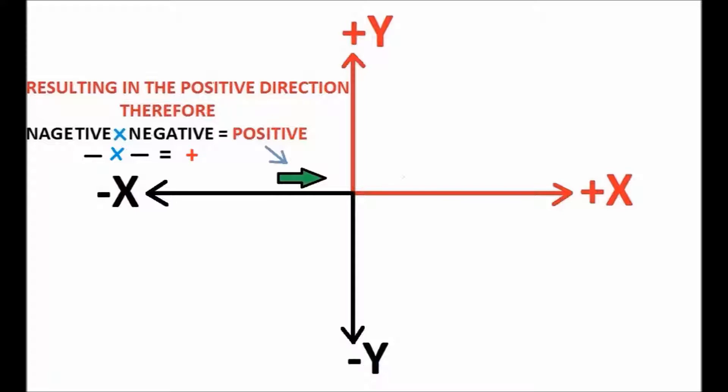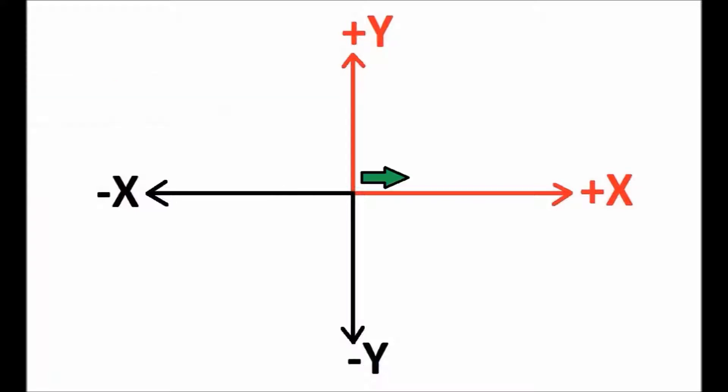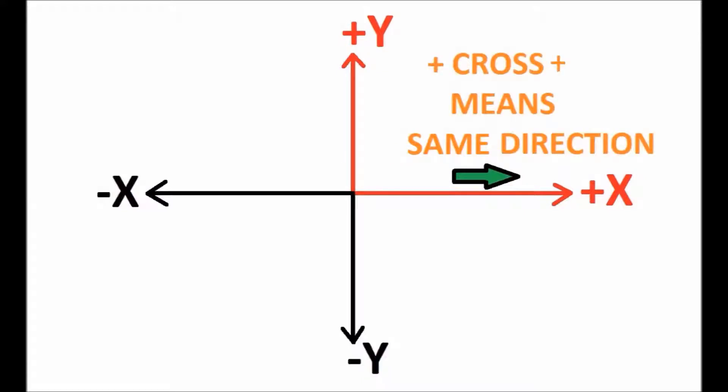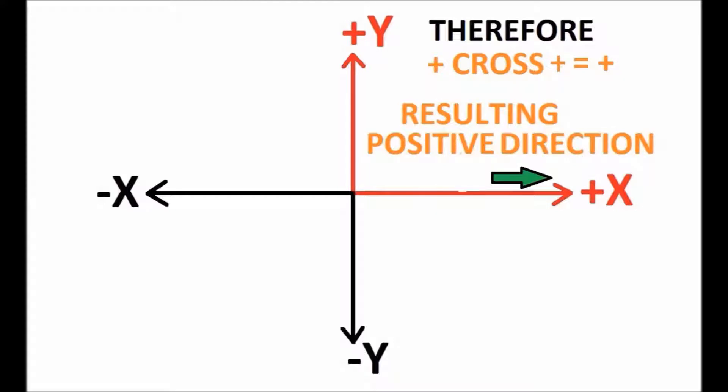When moving in the positive direction crossed with positive means move in the same direction, resulting in the positive direction. Therefore, plus cross plus is equal to plus.